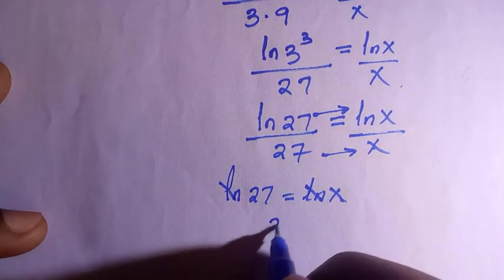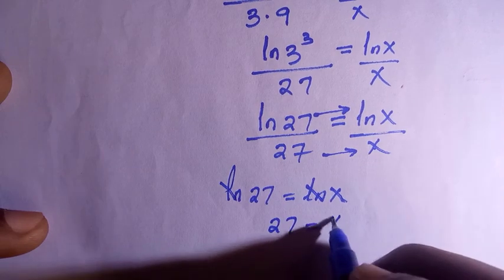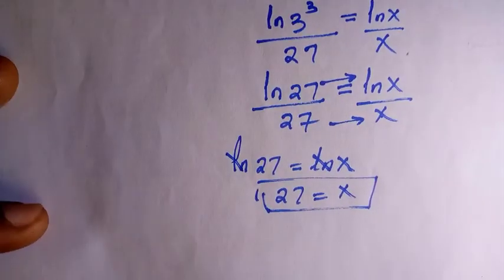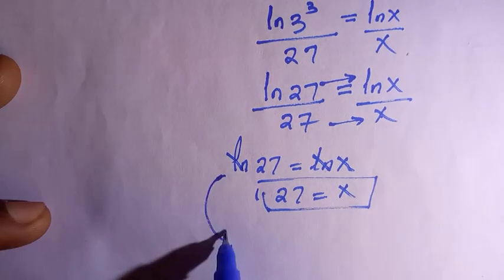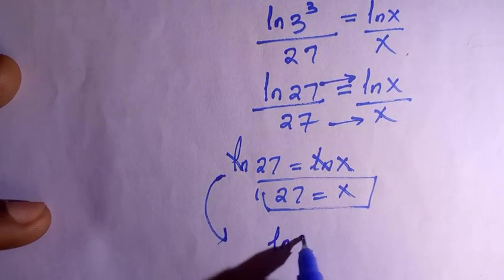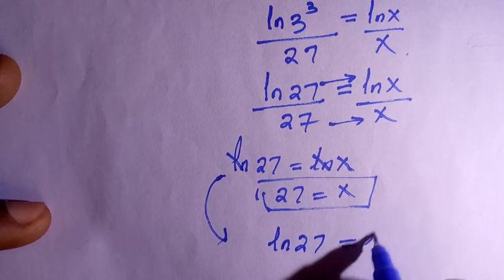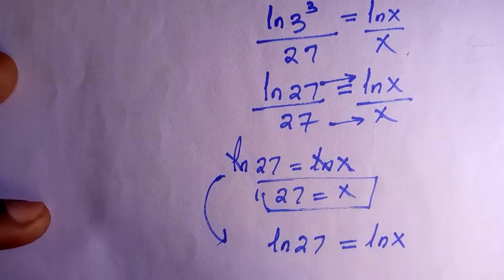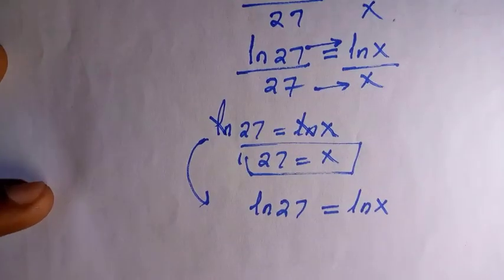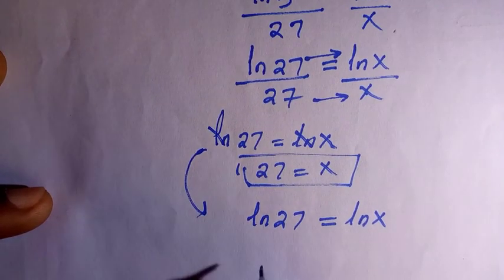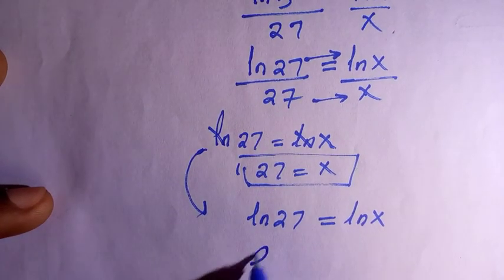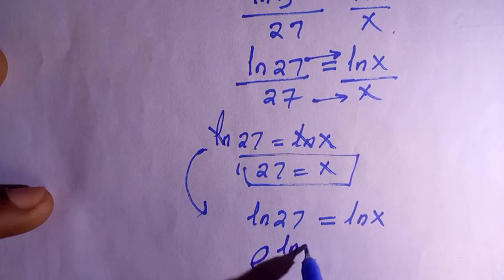Some might be thinking, why do we just cancel ln? We can still do it this way: ln(27) equals ln(x). What can make ln cancel is by introducing the earlier symbol, which is the exponent.